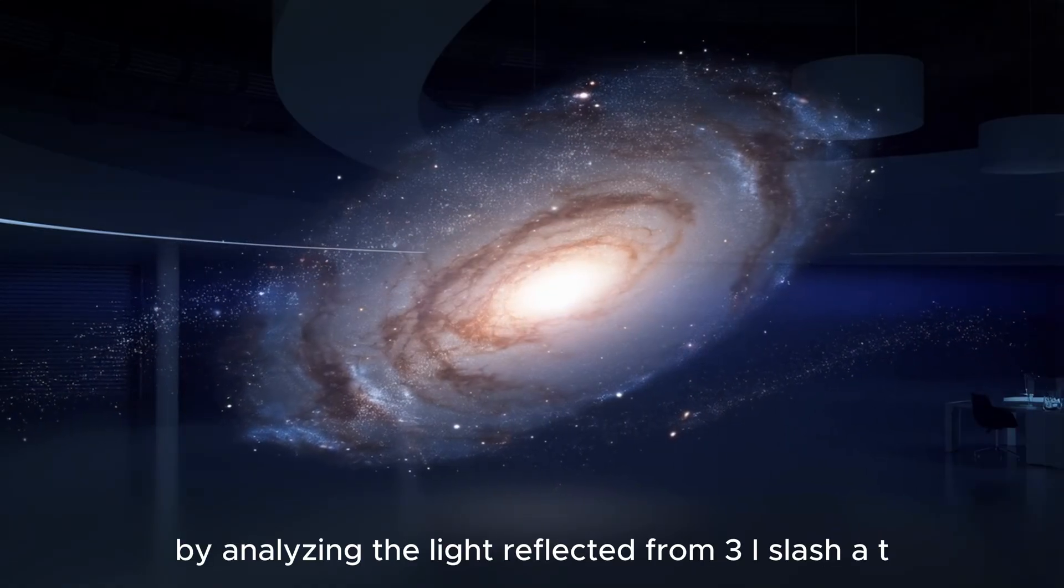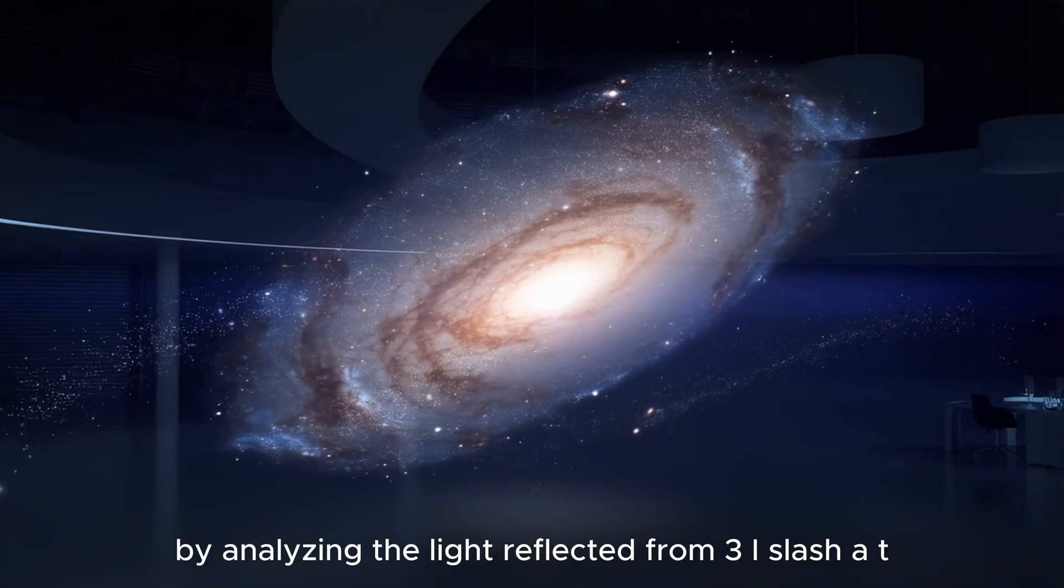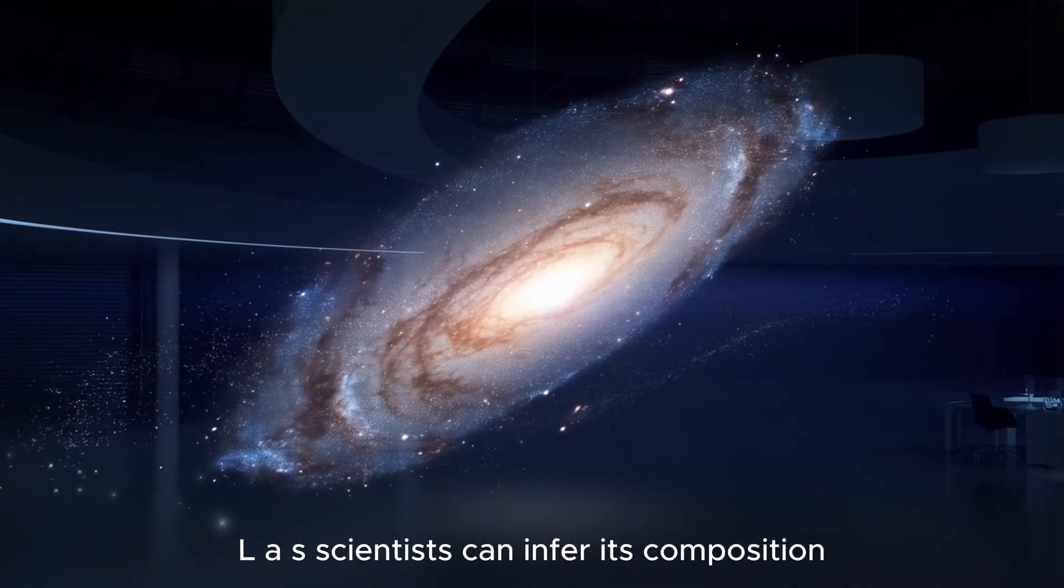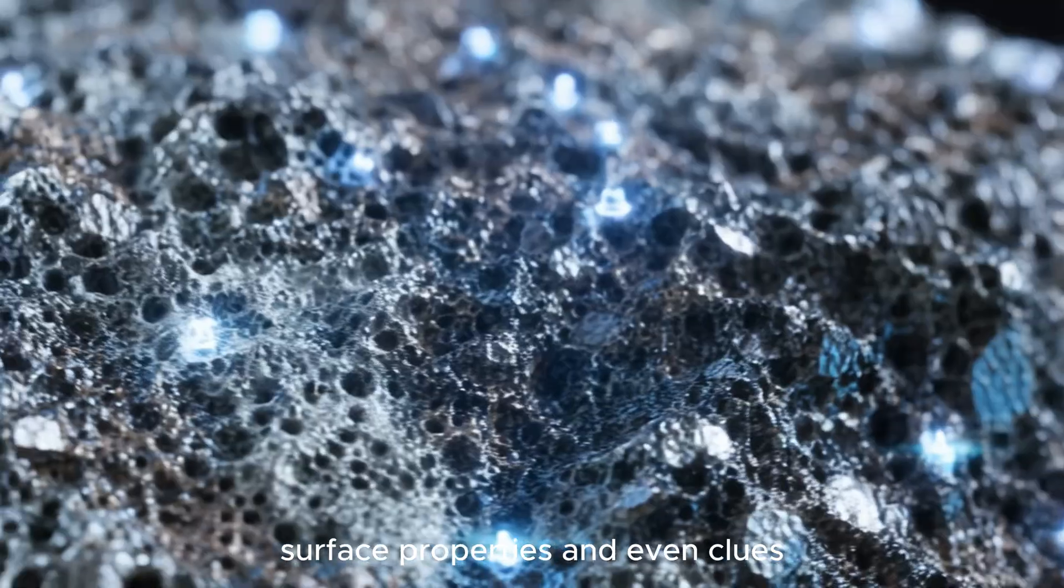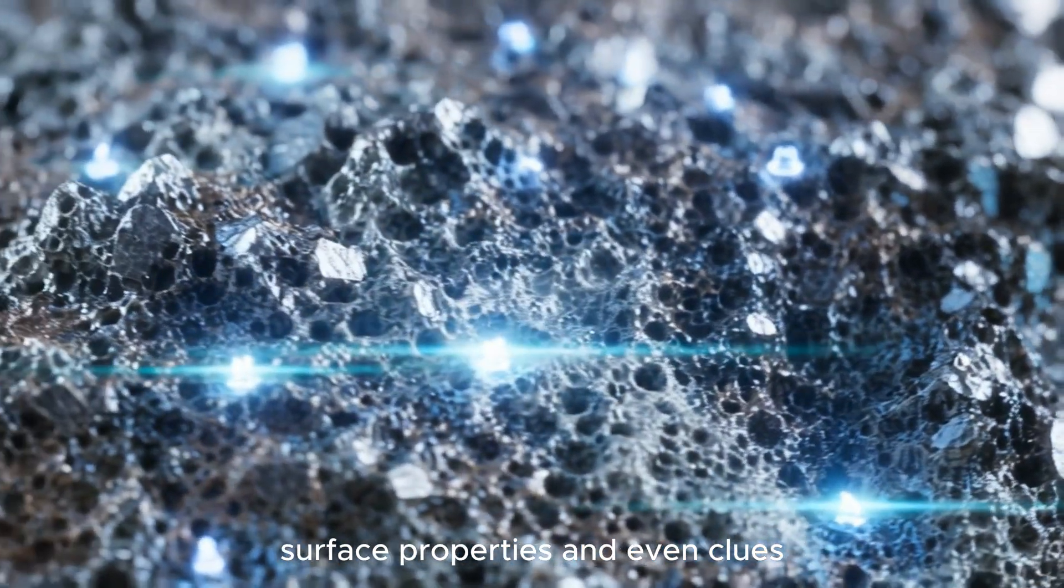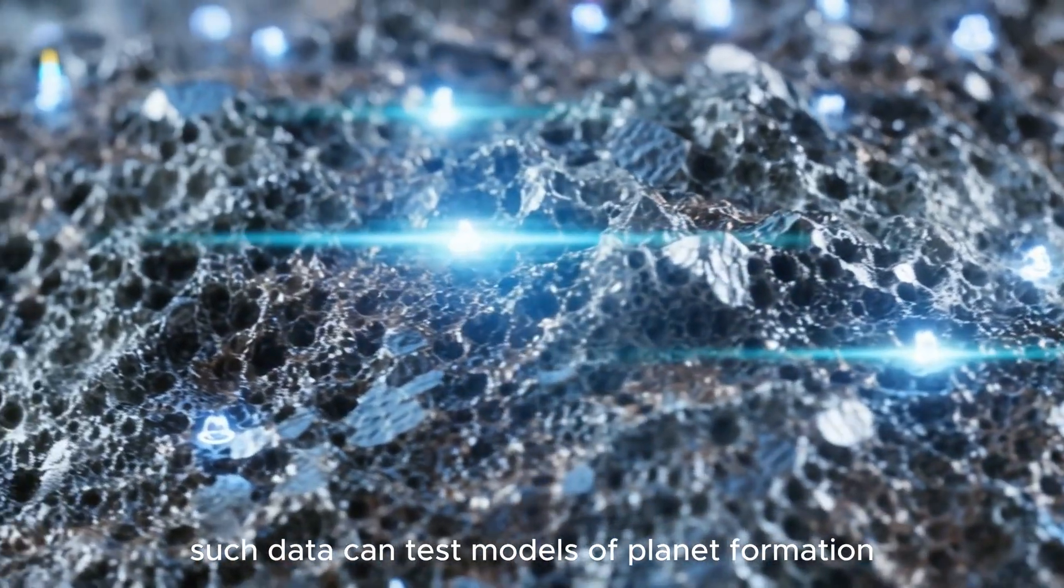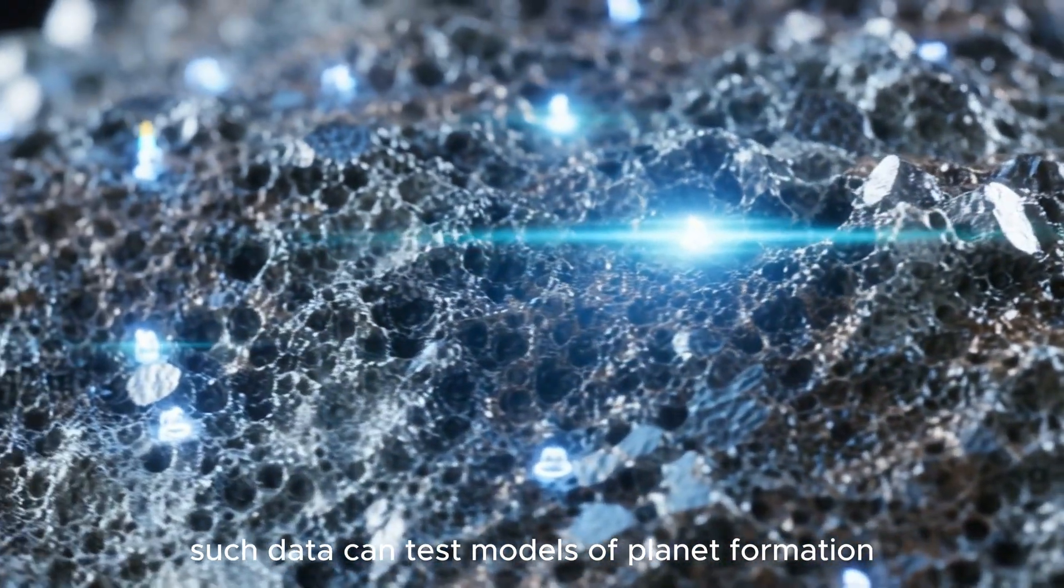By analyzing the light reflected from 3i/ATLAS, scientists can infer its composition, surface properties, and even clues about the temperature and radiation it has endured. Such data can test models of planet formation and destruction far beyond our own sun's influence.